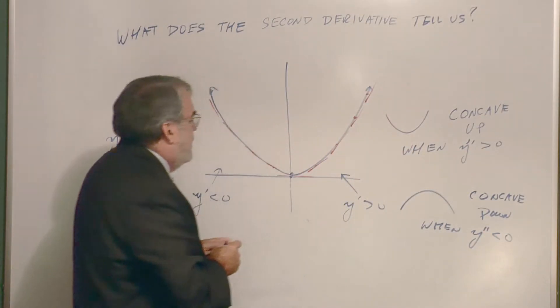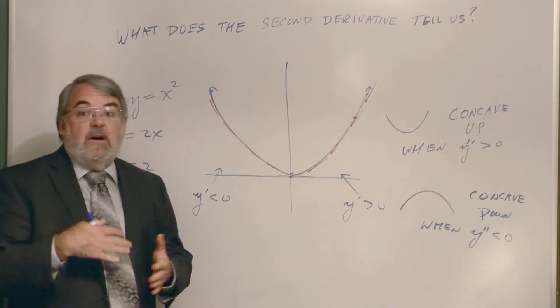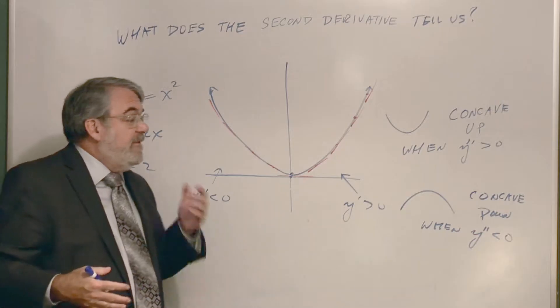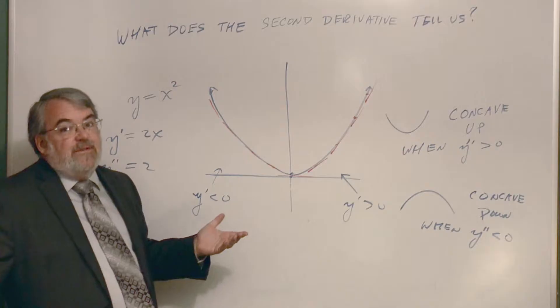So positive or negative tells, describes the concavity of a graph. Now, what happens when the second derivative is equal to zero?